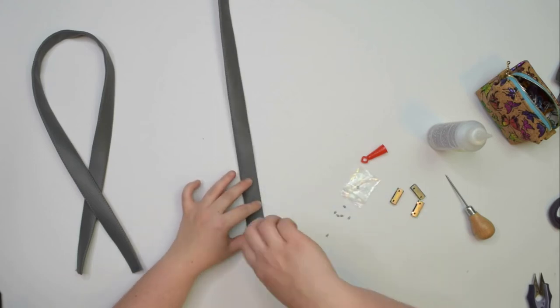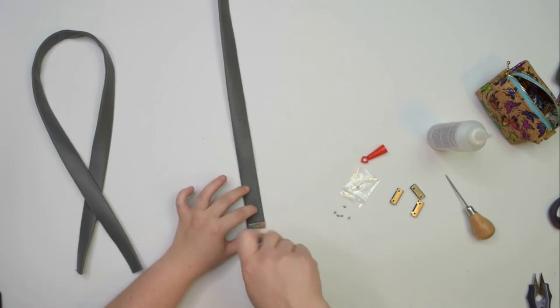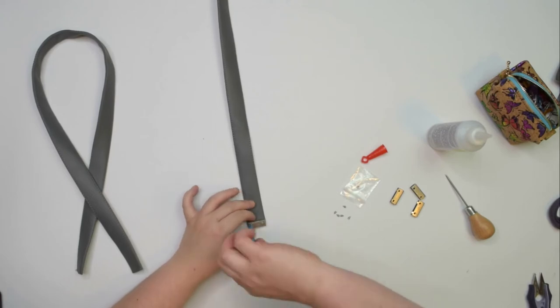When you are done, make sure your handle is not twisted and install another cap end on the other end. Then repeat the process for the remaining ends on the other handle.